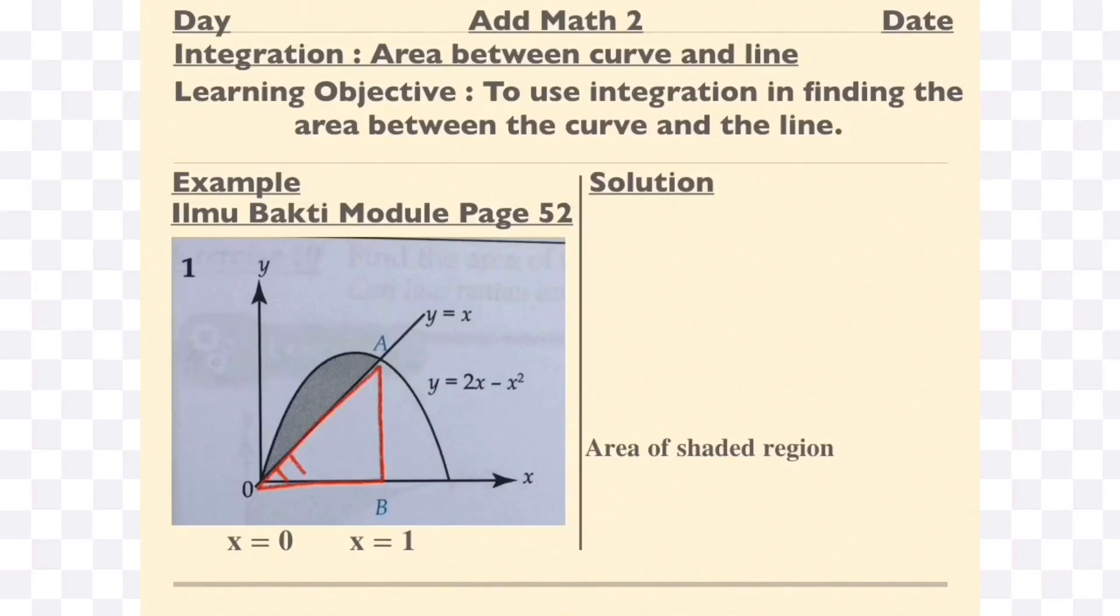Now, you need to find the area of the triangle because once you have the area below the curve, you need to find the area of the triangle and then you can subtract both of them. To find the area of the triangle, the base is already 1 because from 0 to 1, the length would be 1. But the height needs to be found.